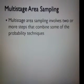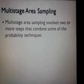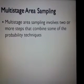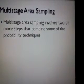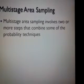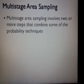The last type of probability sampling is multi-stage area sampling. Multi-stage area sampling involves two or more steps that combine some of the probability techniques discussed previously. More than one technique is used — for example, simple random sampling combined with cluster sampling, or simple random sampling combined with stratified sampling, or a combination of cluster and stratified sampling. Any combination of two or more techniques is called multi-stage area sampling.